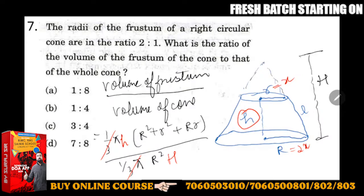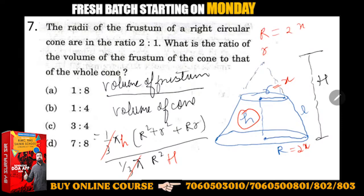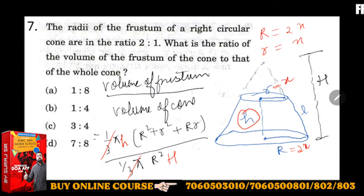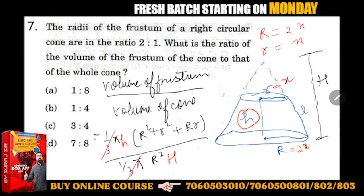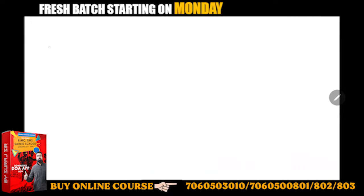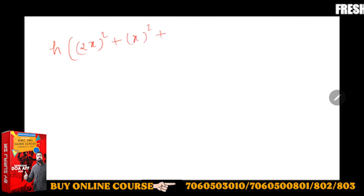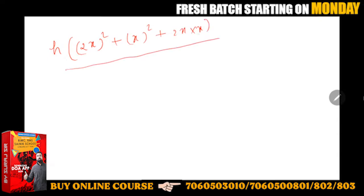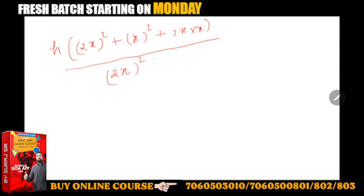Capital R is 2x, small r is x. So volume of frustum is h times [(2x)² + x² + 2x·x] upon (2x)²·H.